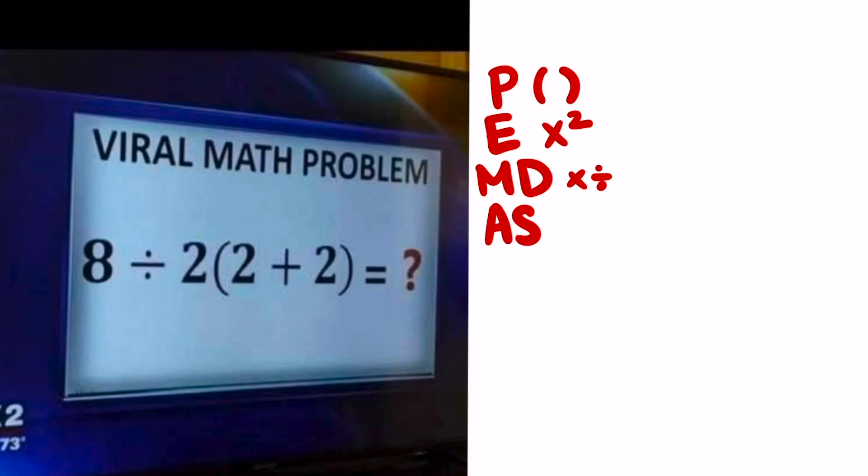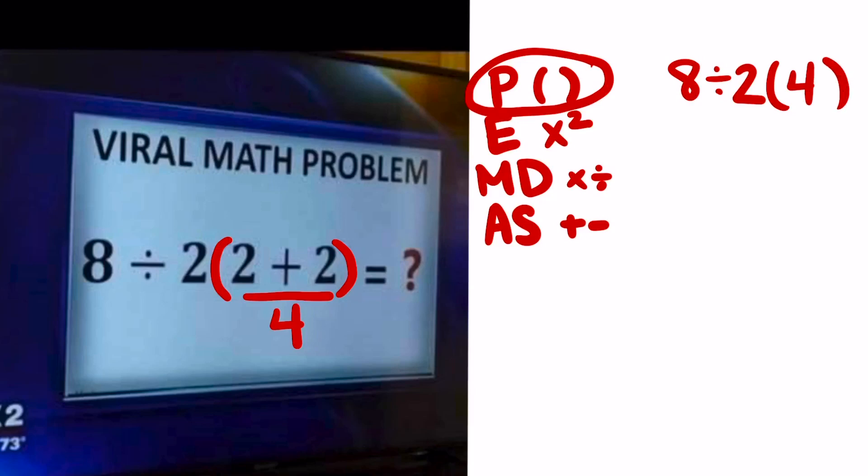So you're going to start with parentheses, then exponents, then multiply and divide, and lastly adding and subtracting. So just like any other problem we're going to start with parentheses which you can see here. In parentheses we have 2 plus 2 which is going to get us 4. So then I'm going to go ahead and just rewrite the problem: 8 divided by 2 and now in parentheses we have 4.